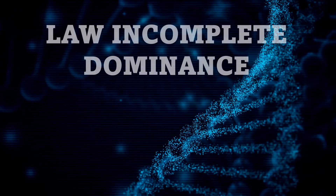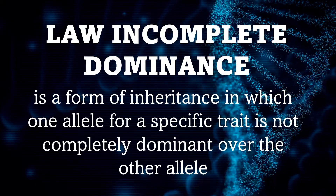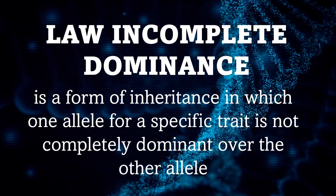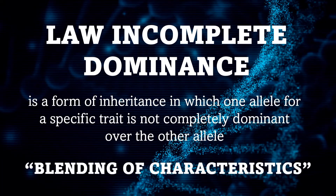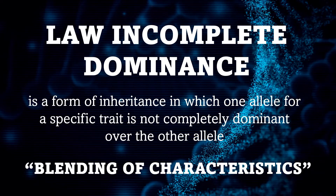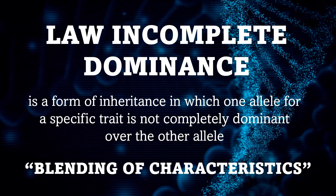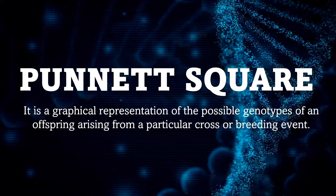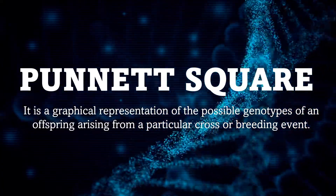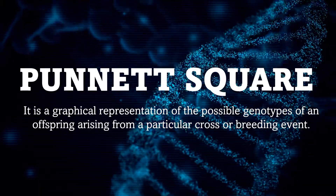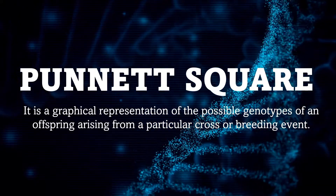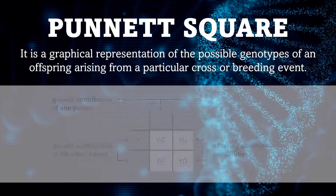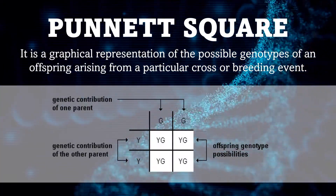The law of incomplete dominance is a form of inheritance in which one allele for a specific trait is not completely dominant over the other allele. Therefore, there is a blending of characteristics. To understand the mechanism of incomplete dominance, Karl Correns used the Punnett square — a graphical representation of possible genotypes of an offspring arising from a particular cross or breeding event. It is a tool used to determine the chance of inheriting a specific trait by showing the genetic contribution of each parent.